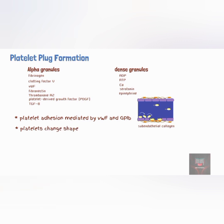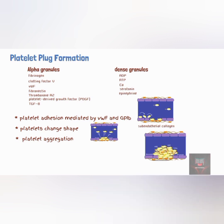Upon adhesion, the platelet undergoes a dramatic change in shape from a round disc to a flat plate with multiple spiky protrusions. This allows the platelet to interact with additional platelets in the blood, leading to platelet aggregation. This change of shape and activation is often referred to collectively as platelet activation. Eventually, the accumulation and attachment of large numbers of platelets forms a mass called a platelet plug.